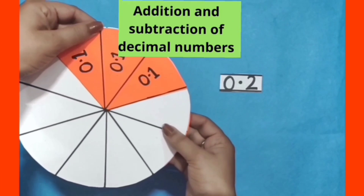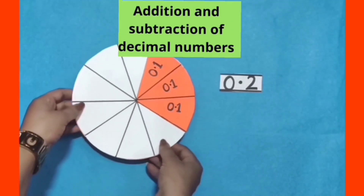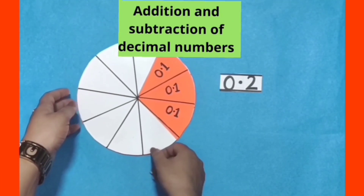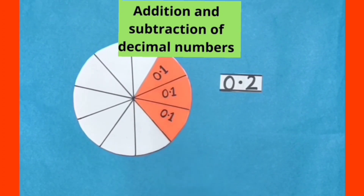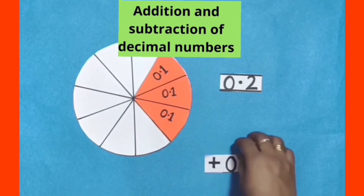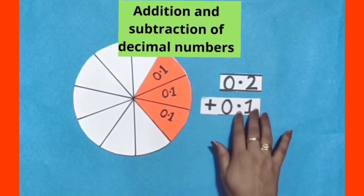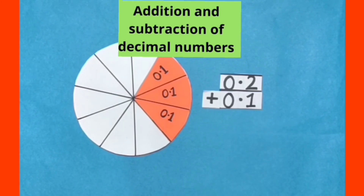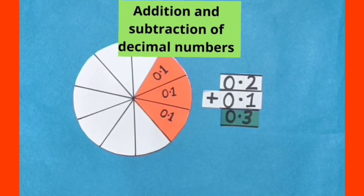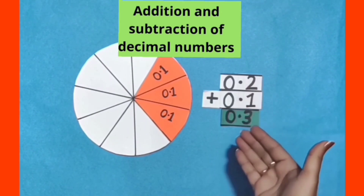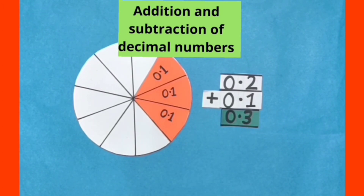When we move 1 more colored part of the circle further, we get 3 colored parts of the circle. Its decimal form will be 0.3. We have to add 0.1 to 0.2 to get 0.3. In this way, we can do addition of decimal numbers.